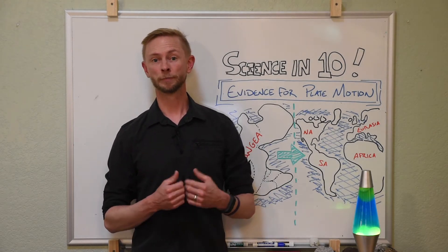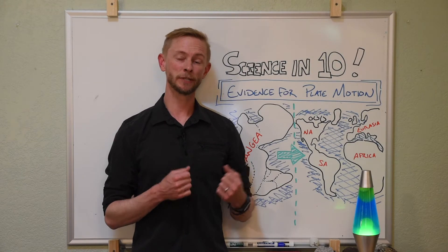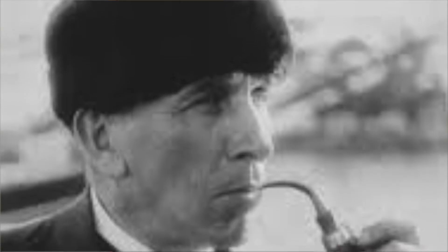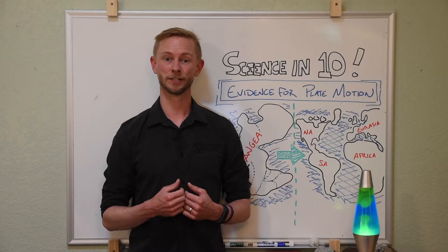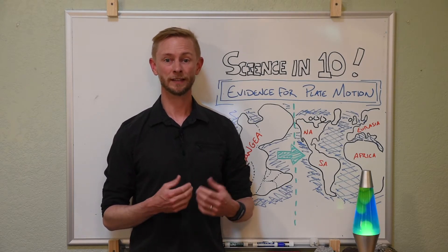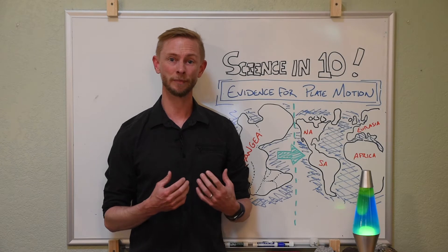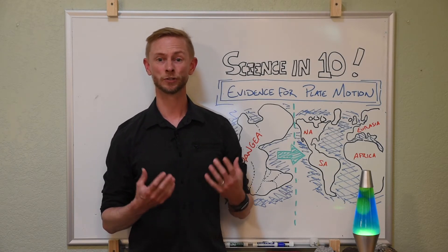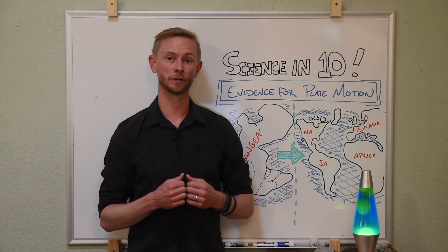One of the first people to propose an idea that would eventually become plate tectonics was Alfred Wegener, a German meteorologist and geophysicist. Wegener's hypothesis of continental drift stated that the positions of the continental landmasses were not stable, rather the continents drifted across the Earth's surface.